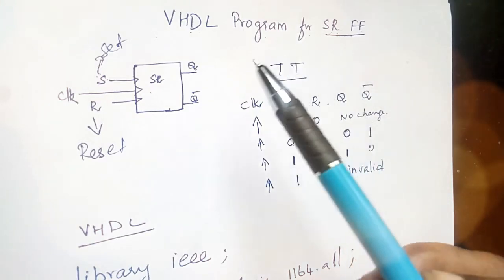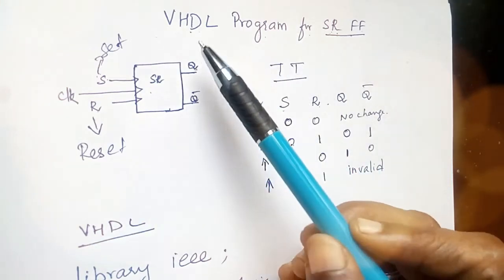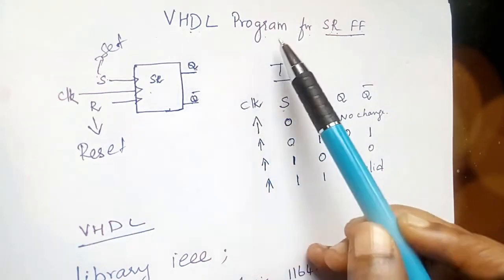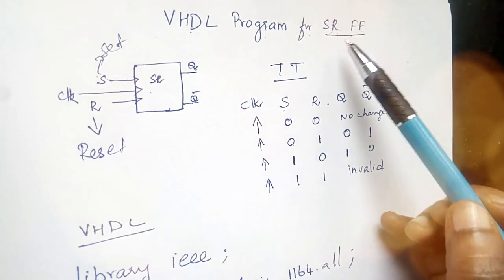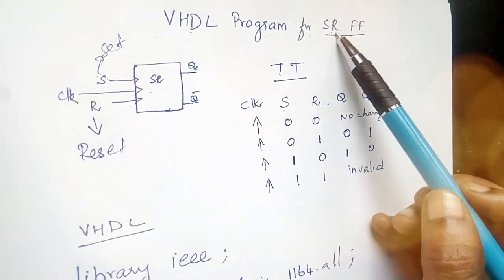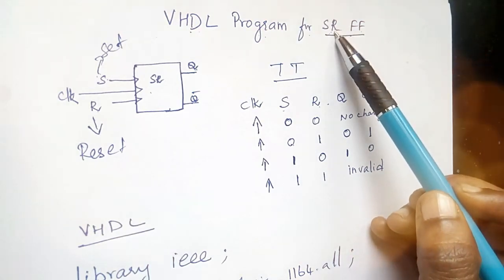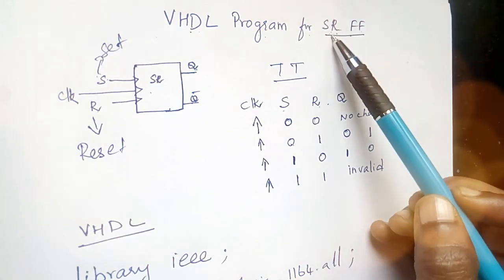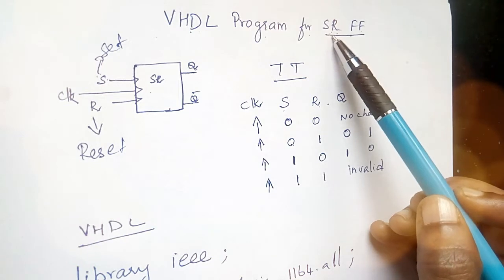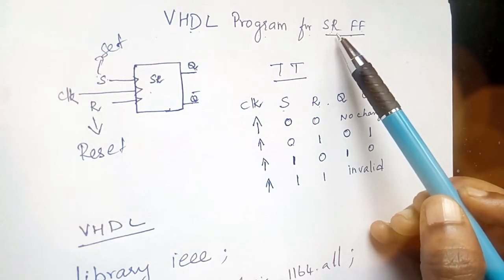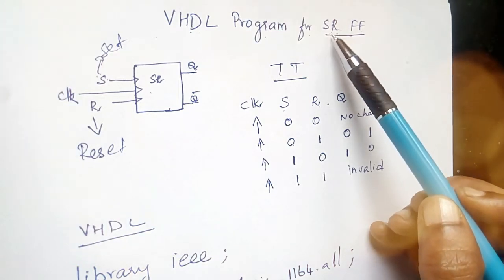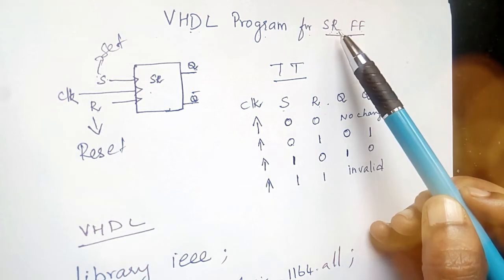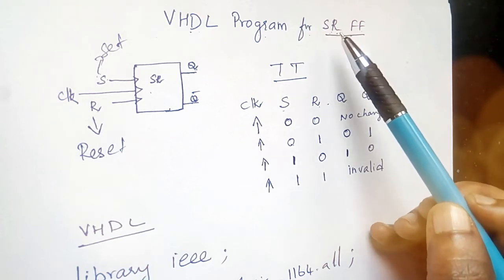In this video we are going to see how to write a VHDL program for SR flip flop. Before writing the program we have to know what is meant by SR flip flop. An SR flip flop is an electronic device that has the capacity to store either 0 or 1.